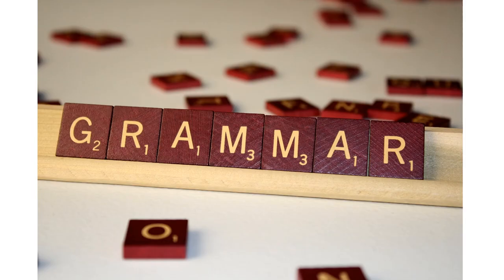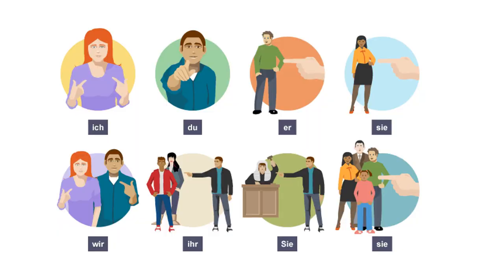We're going to start off with some grammar. Here you have the different subjects in German: ich - I; du - you, that's informal to a friend, someone your age that you know well or a member of your family; er - he; sie; wir. Then ihr - and that's the one we're focusing on today, ihr, you plural. Next we have Sie with a capital - that's for formal you, so you might say that to a judge or somebody older than you or in a position of authority over you. And lastly we have sie, meaning they.